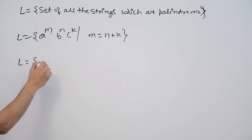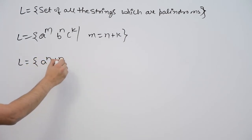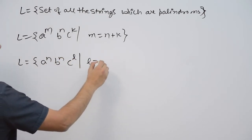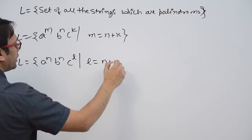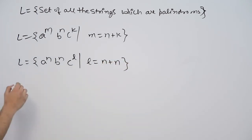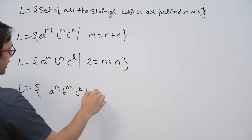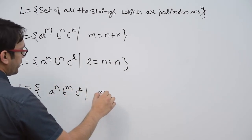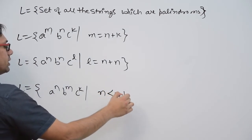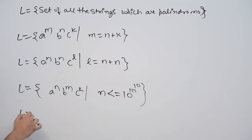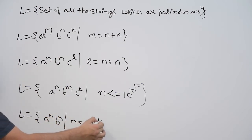The third language is a raised to the power n, b raised to the power n, c raised to the power l, such that l is equal to n plus n. And the fourth language is a raised to the power n, b raised to the power m, c raised to the power k, such that n is less than or equal to 10 raised to the power 10 raised to the power 10. We can also have a raised to the power n, b raised to the power n, such that n is less than or equal to 10 raised to the power 10.